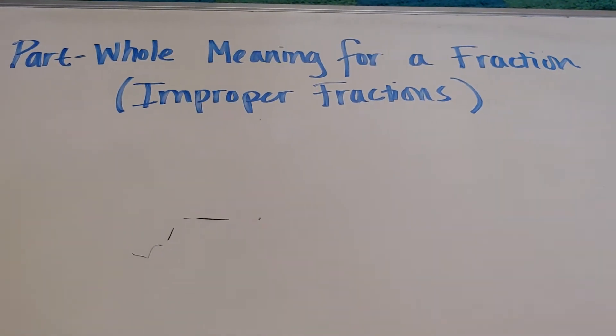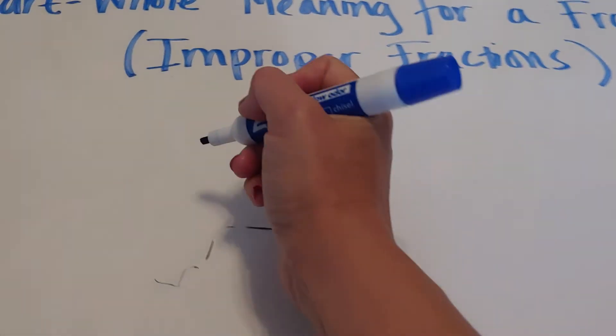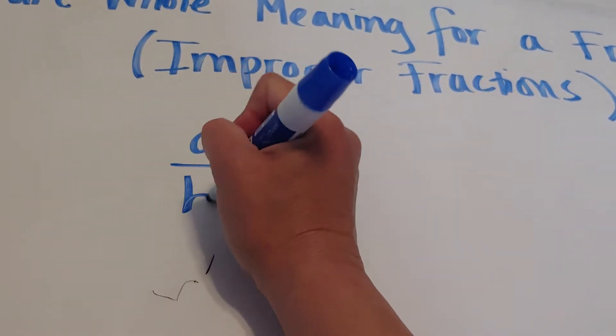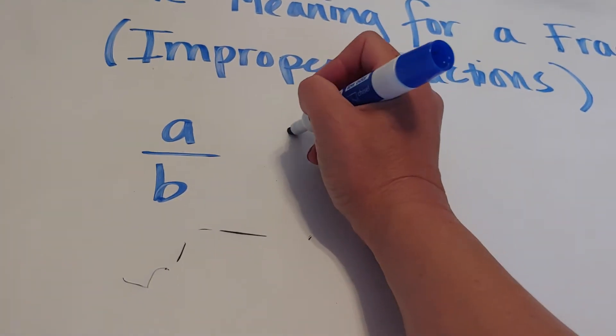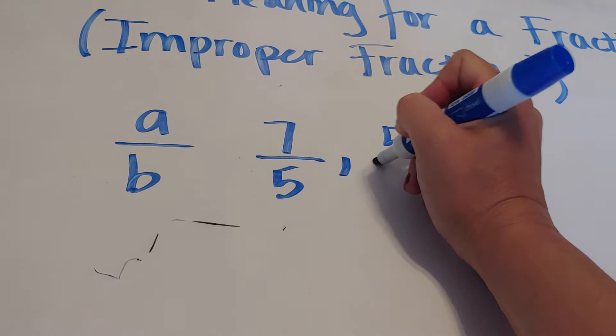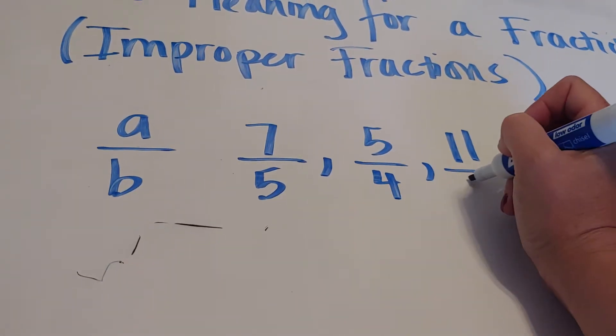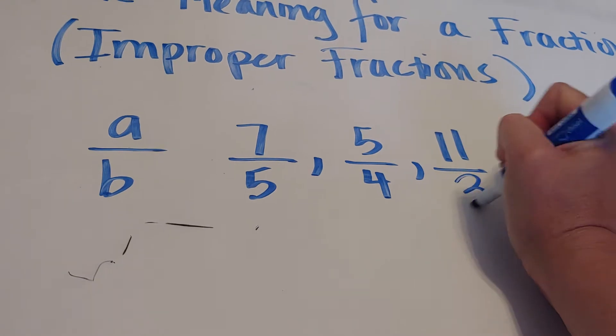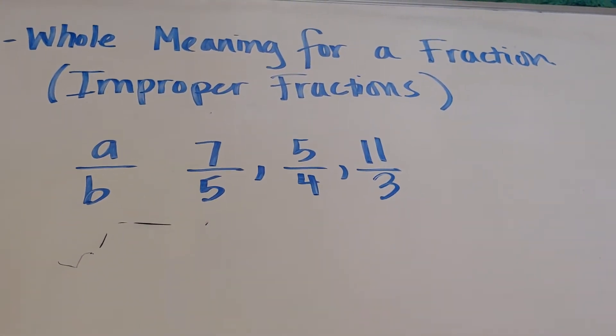In this video, we're going to look at the part whole meaning for a fraction, but this time we're going to look at improper fractions. So that's when we have a fraction where the top or the numerator is bigger than the denominator. So we could have like 7 fifths, we could have 5 fourths, we could have 11 thirds. It could be anything as long as the top number is bigger than the bottom.